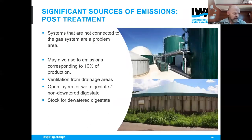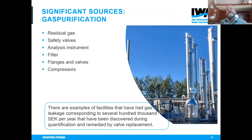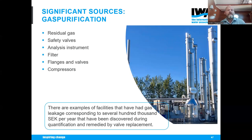Big emission sources we've found are in post-treatment — if systems are not connected to the gas system, very large emissions can occur. Historically, biogas upgrading units have also been a major source. Residual gas from upgrading can vary greatly between facilities and within certain techniques due to process disturbances, so frequent measurement is important.